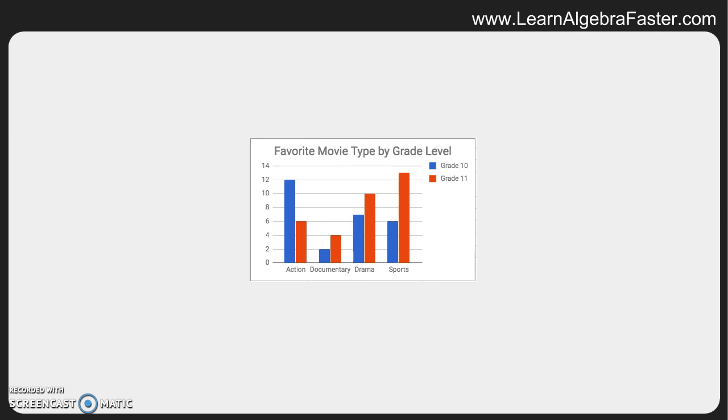For one example, this bar graph discusses the favorite movie type by grade level. So you can see here that there are several different movie types that we are discussing: action movies, documentaries, drama, and sports. Those are the four movie types that we're discussing. But as I discussed earlier, this is a cool bar graph in the fact that you see red lines and blue lines.